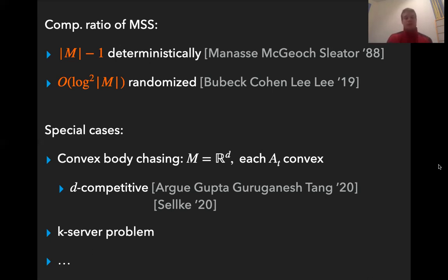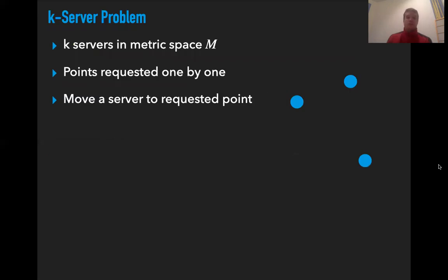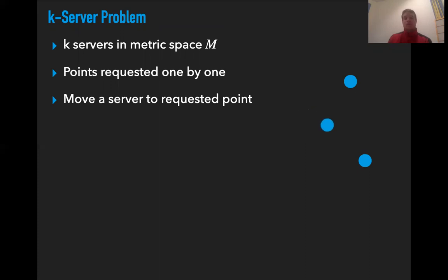Let's look more closely at the k-server problem. In this problem there's also a metric space, but now there are k servers in this metric space and points of the metric space are requested one by one. Whenever a point is requested, one of the servers has to be selected to go to the point. Then the next point is requested, again one of the servers has to go to the request, and the cost is defined as the total distance traveled by all the servers.